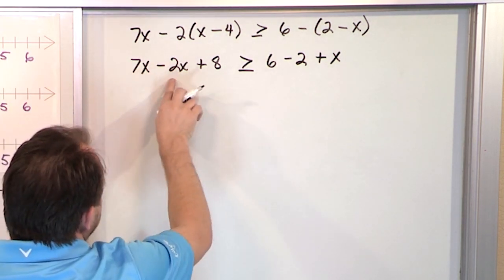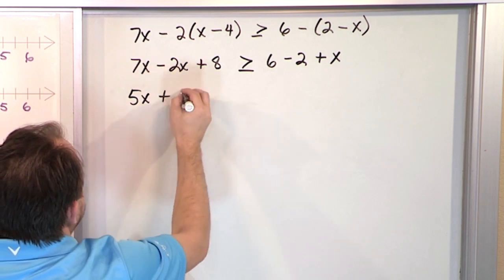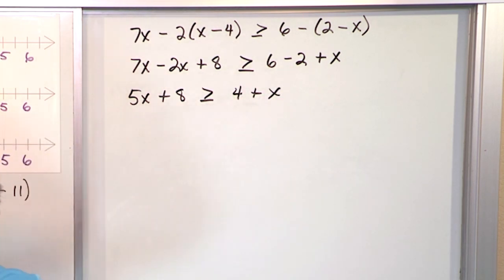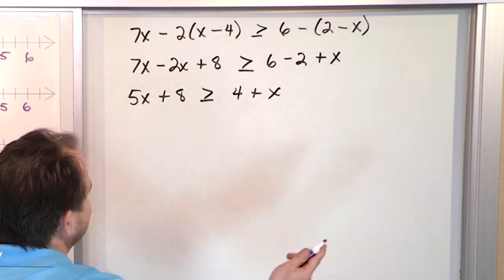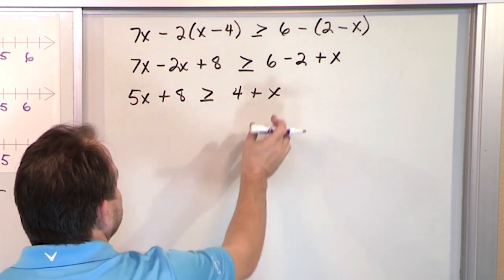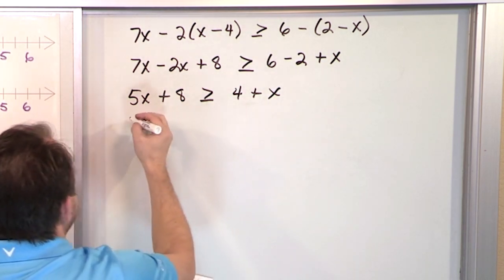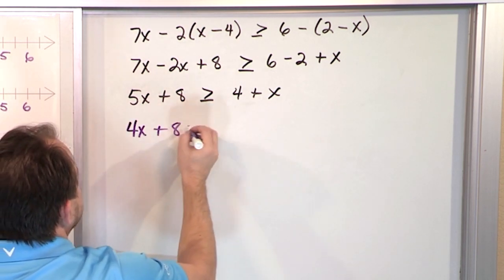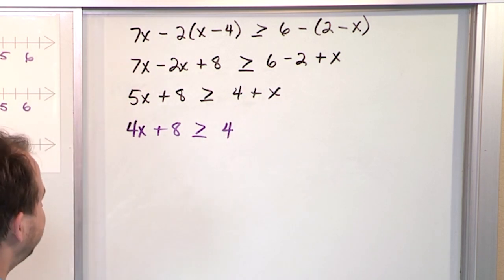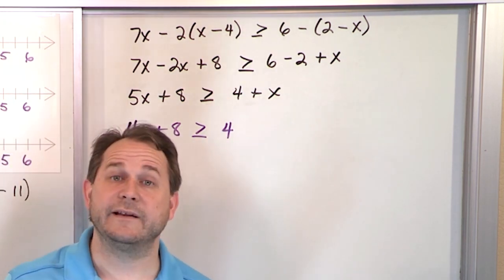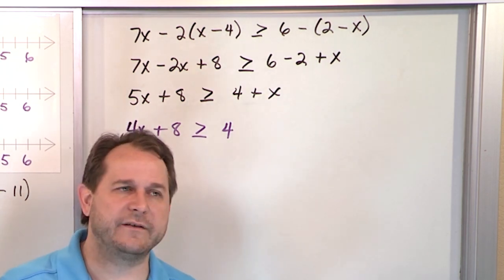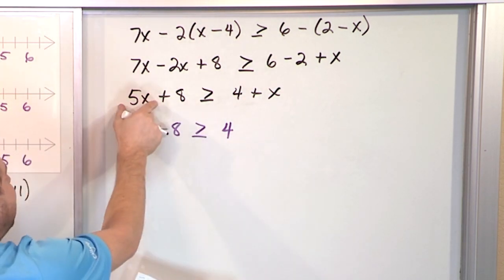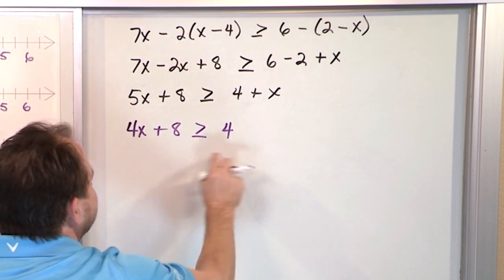Now combining: 7x minus 2x is 5x, plus 8, greater than or equal to. On the right, 6 minus 2 is 4, plus x. Now we want to get the x's by themselves, so we subtract x from both sides. That gives us 5x minus x which is 4x, plus 8 on the left, and only 4 on the right.